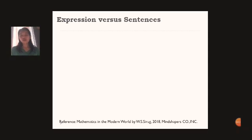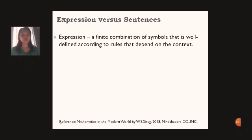Now, as part of learning mathematical language and symbols, we have to know these two things: expression versus sentences. When we say expression, it's a finite combination of symbols that is well-defined according to rules that depend on the context. The symbols here can be numbers, variables, operations, functions, punctuations, brackets, or groupings. So we are using that to determine the order of operation and other aspects of mathematical syntax.